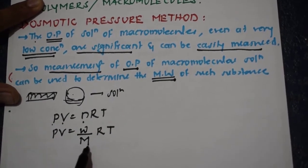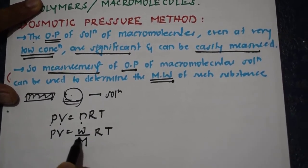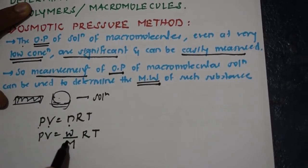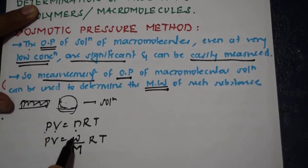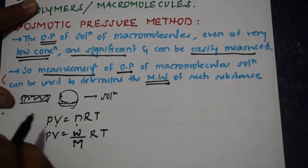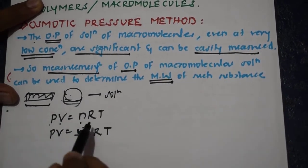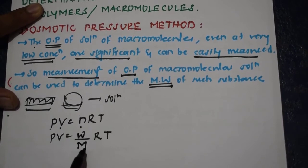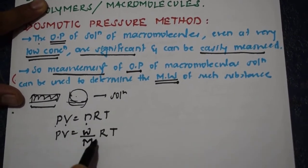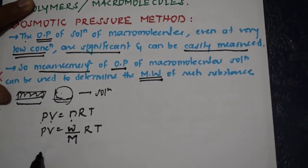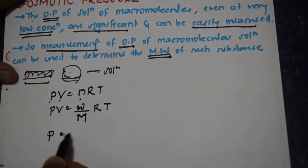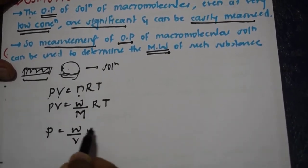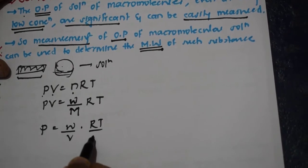Our aim is to determine the molecular weight of the polymer, where M is the molecular weight of the polymer and W is the given weight — how much weight of this polymer we take. From this, since V is volume, I can rearrange this term as P is equal to W divided by V, into RT divided by M.